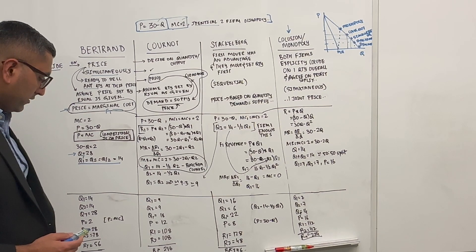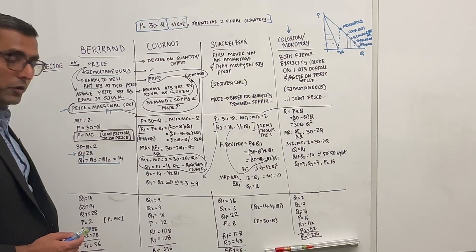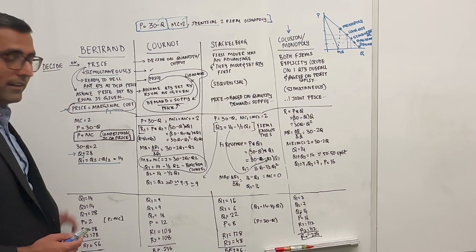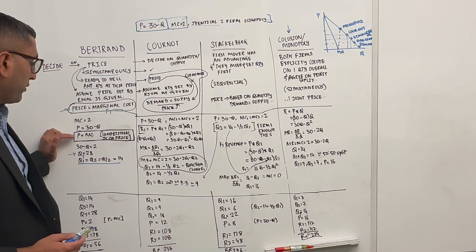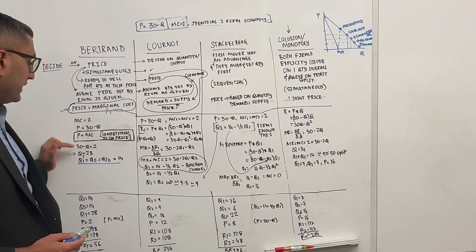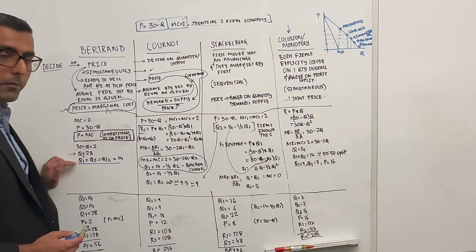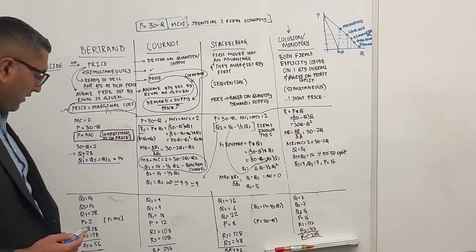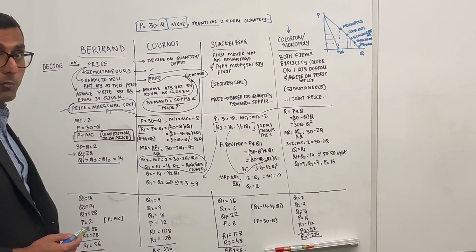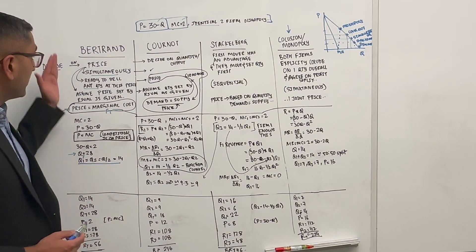Revenue for each firm is price times quantity: 2 times 14 = 28. Total revenue is 56. From the given price you can easily calculate quantity, from quantity you can calculate revenue, and from revenue you can calculate profits. That's Bertrand competition.